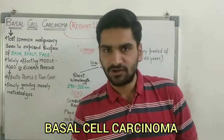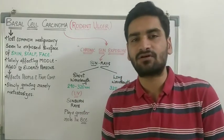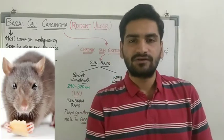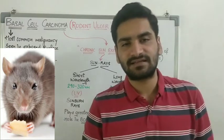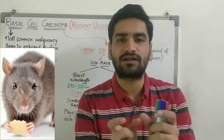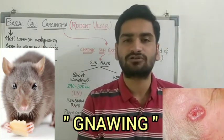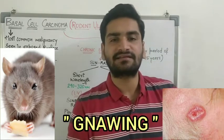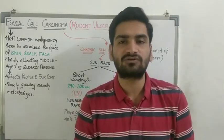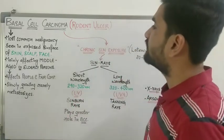Basal cell carcinoma has a new name that is known as rodent ulcer. It is called rodent ulcer because a rodent — for example, a rat — eats through its two main incisors in a gnawing pattern. The lesion appears as if some rodent has eaten the skin in whichever area is affected, so it is known as rodent ulcer.